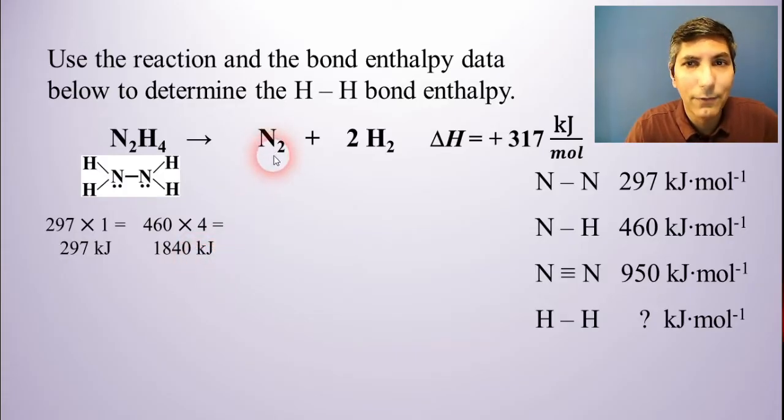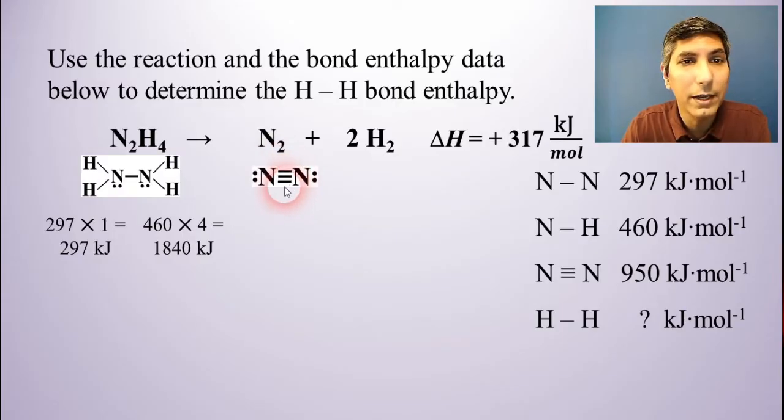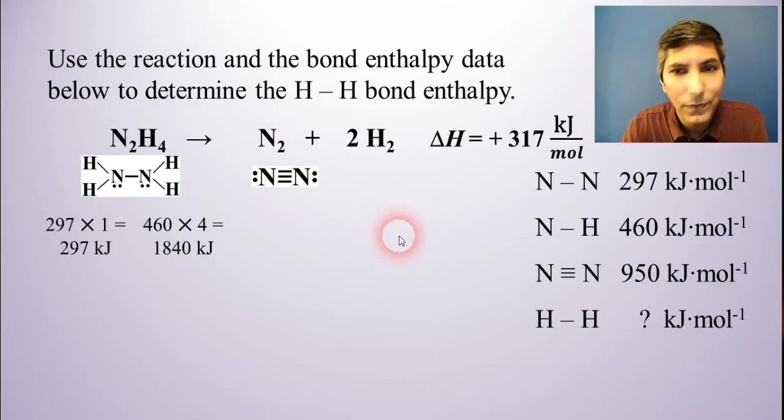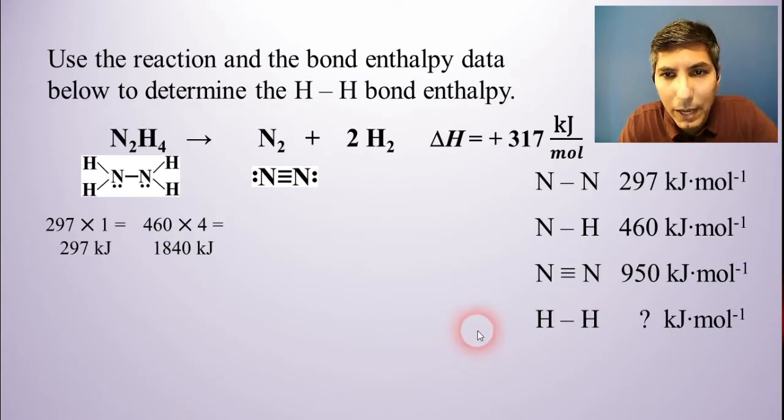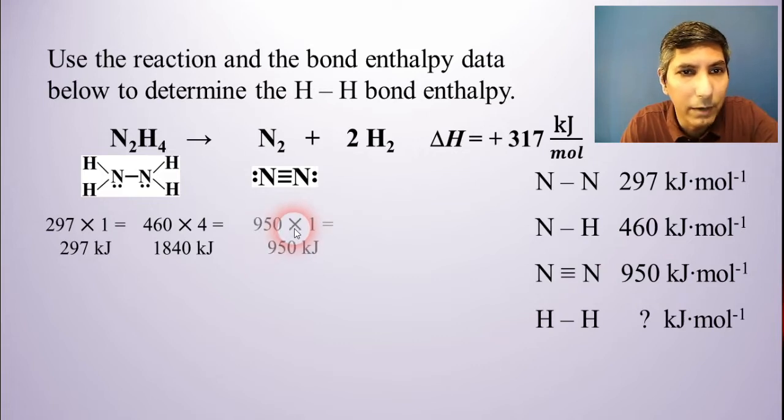Now, on the product side, I have nitrogen gas, N2. When you draw that out, you'll find that it is a triple bond. And the triple bond has a very high bond enthalpy, which you would expect. Triple bonds would have a lot of energy in there. So we have 950 kilojoules per mole. A lot of energy released when that bond is formed. And it takes a lot of energy to break it as well. So 950, only one of those bonds.